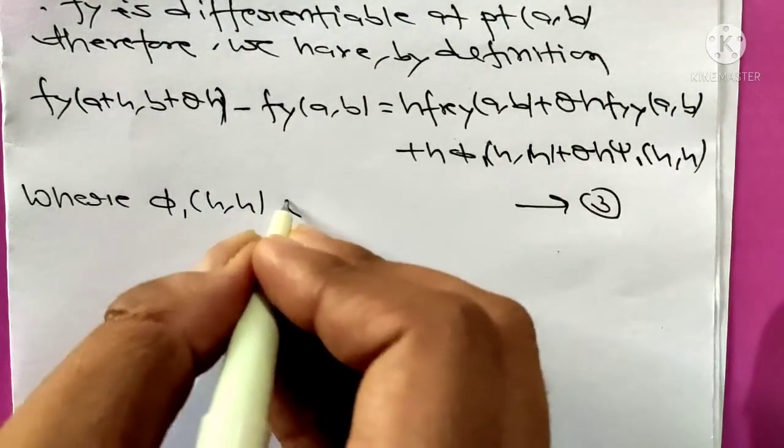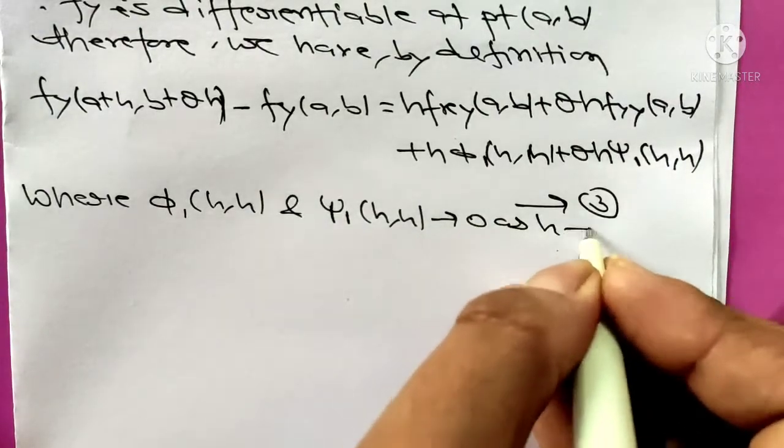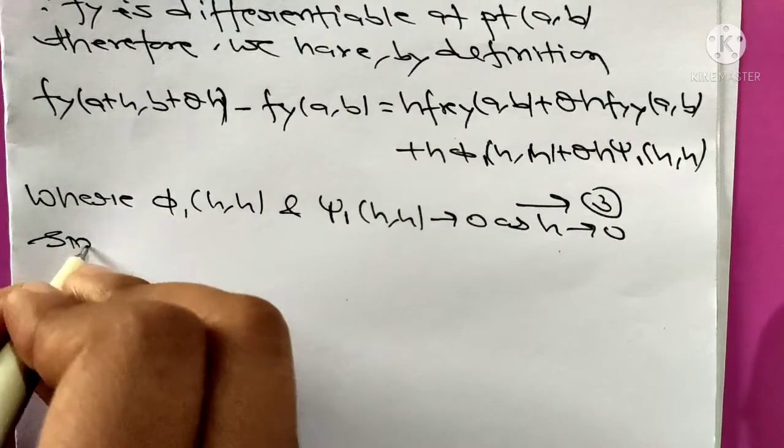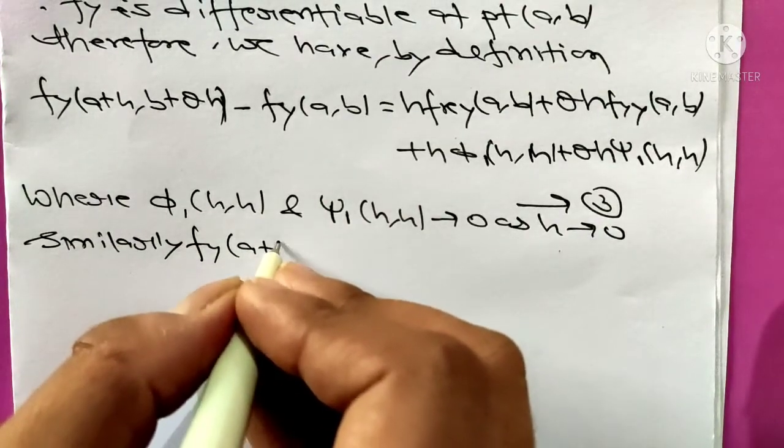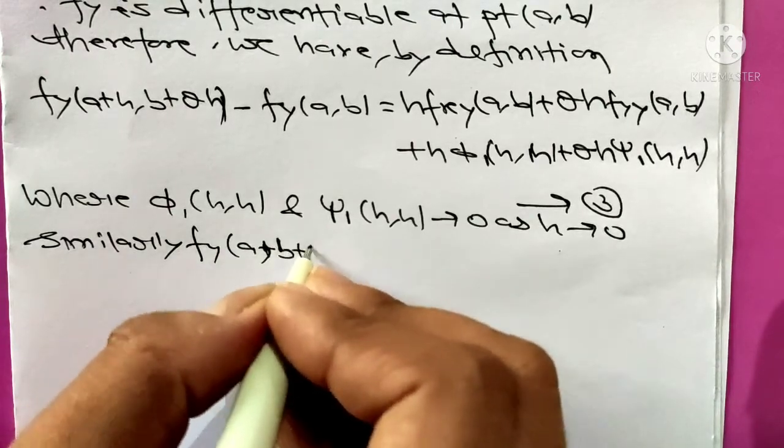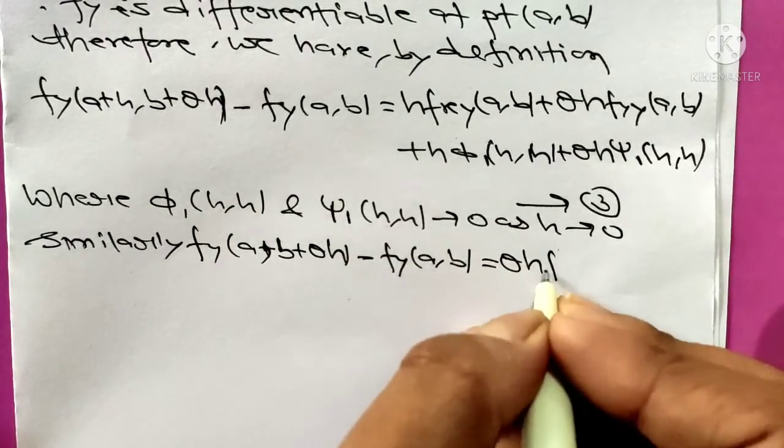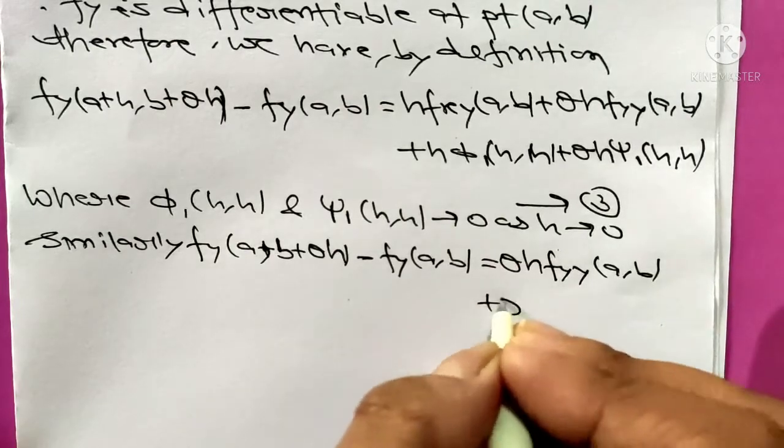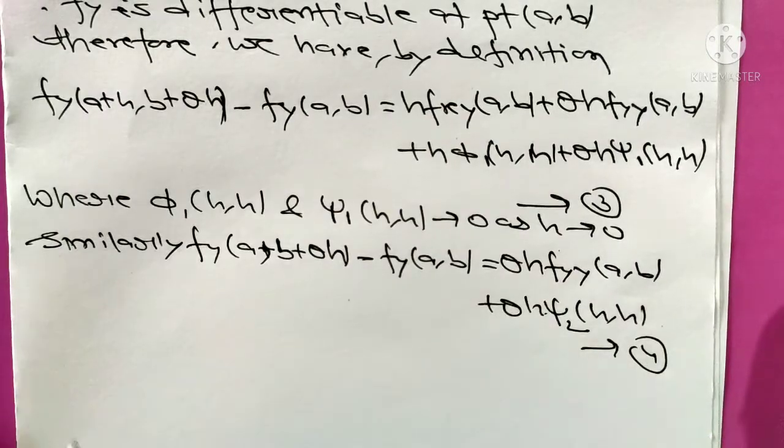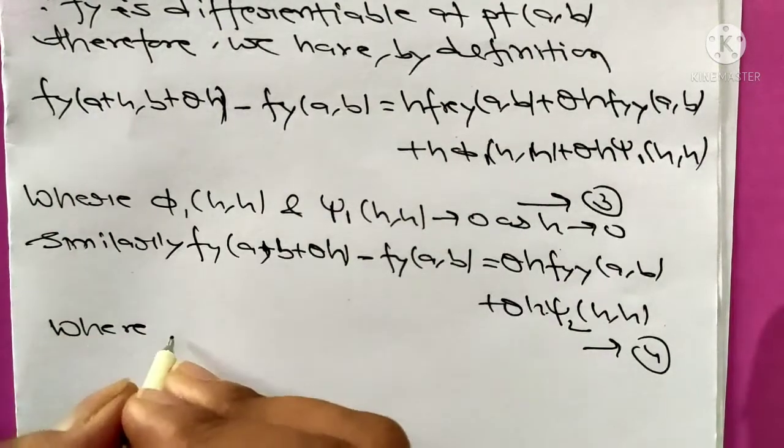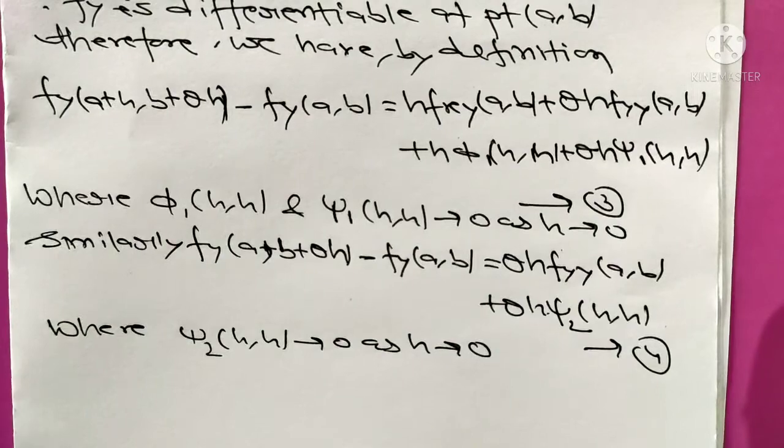Where φ1(h,h) and ψ1(h,h) tend to 0 as h tends to 0. Similarly, fy(a, b+θh) minus fy(a,b) equals θh times fy(a,b) plus θh times ψ2(h,h). Give it equation 4, where ψ2(h,h) tends to 0 as h tends to 0.